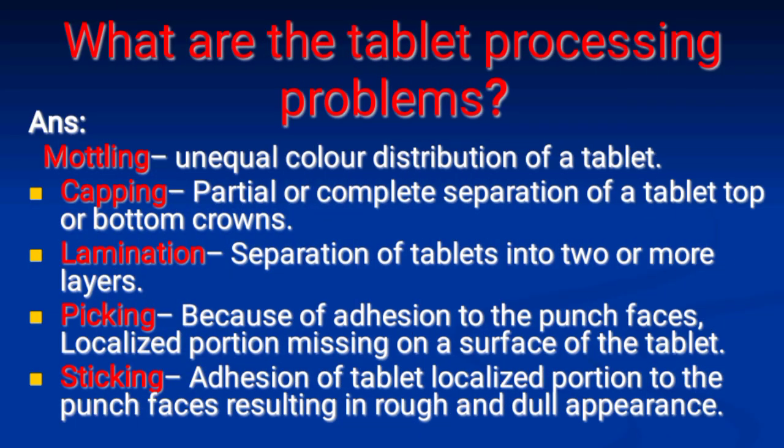Next: What are the tablet processing problems? Answer: Mottling — unequal color distribution of a tablet. Capping — partial or complete separation of a tablet's top or bottom crowns. Lamination — separation of a tablet into two or more layers. Picking — localized portion missing on the surface of the tablet due to adhesion to punch faces. Sticking — adhesion of tablet material to punch faces resulting in a rough and dull appearance.